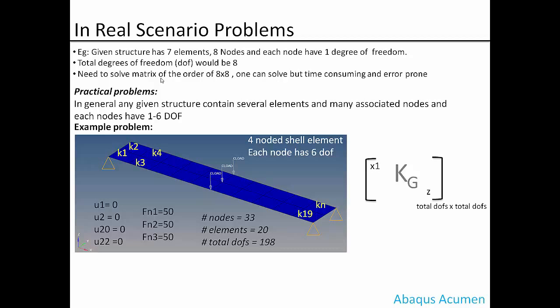In real scenario, any given structure will have more than, say, two elements. The number of nodes will also be high. To just for understanding, we'll keep degree of freedom one only, that is single. For example, we have this given structure with seven elements and say eight nodes associated to those seven elements, and each node has one degree of freedom. So total degree of freedom is 8 for this problem.